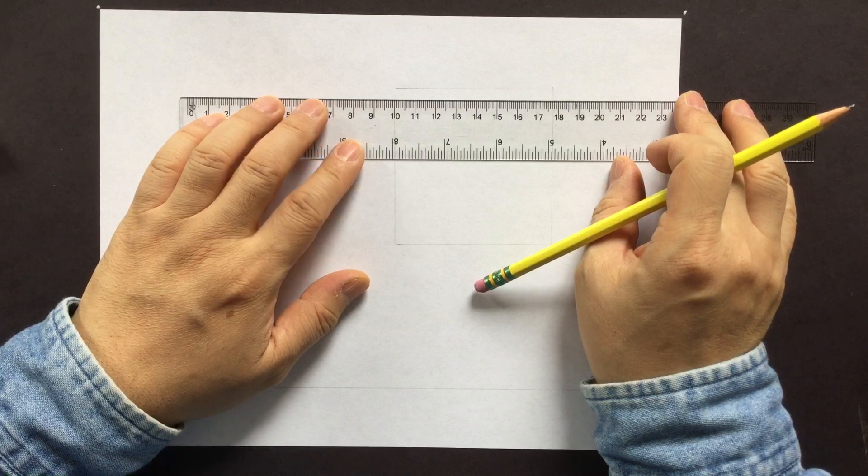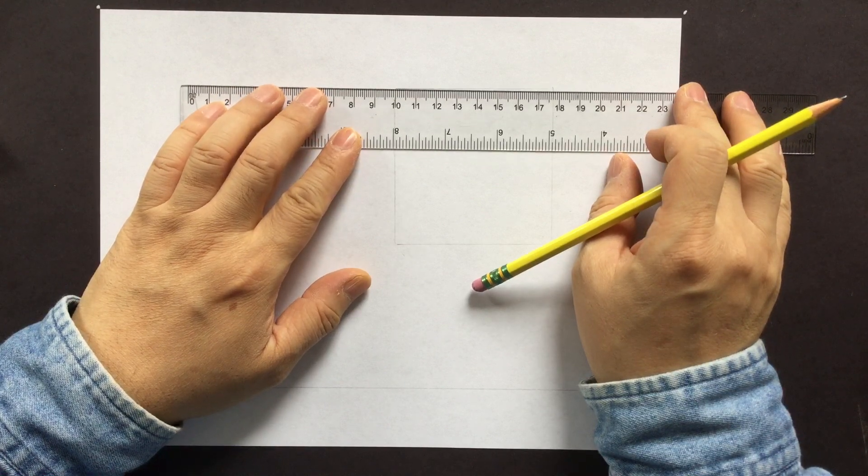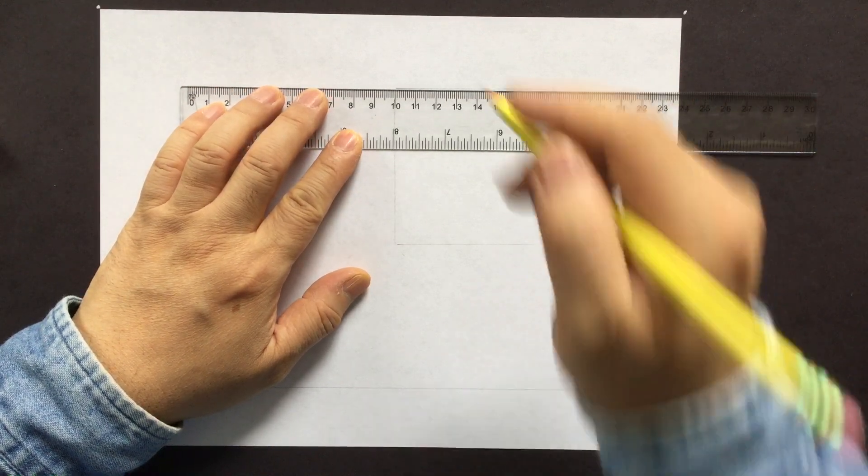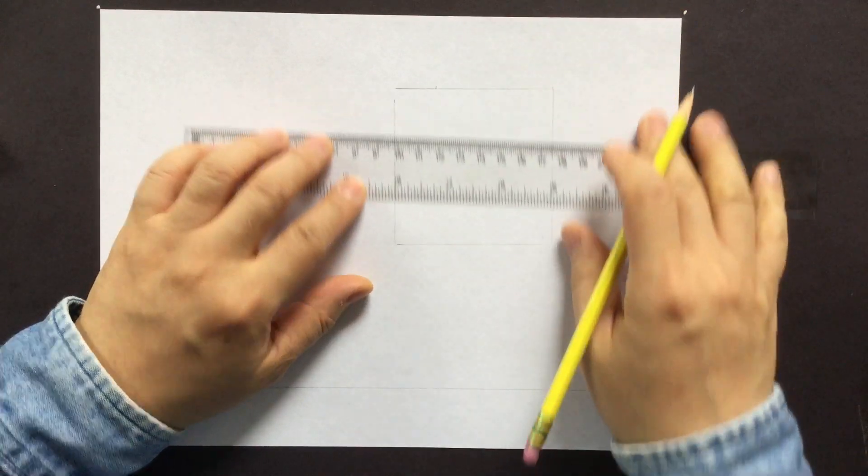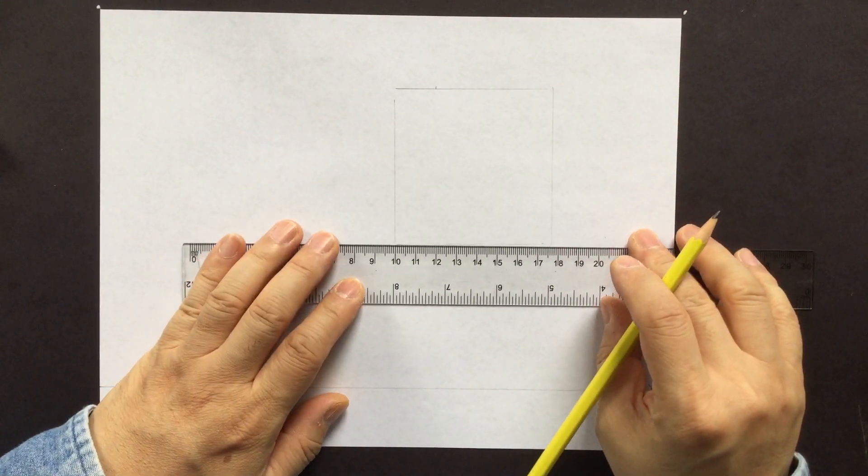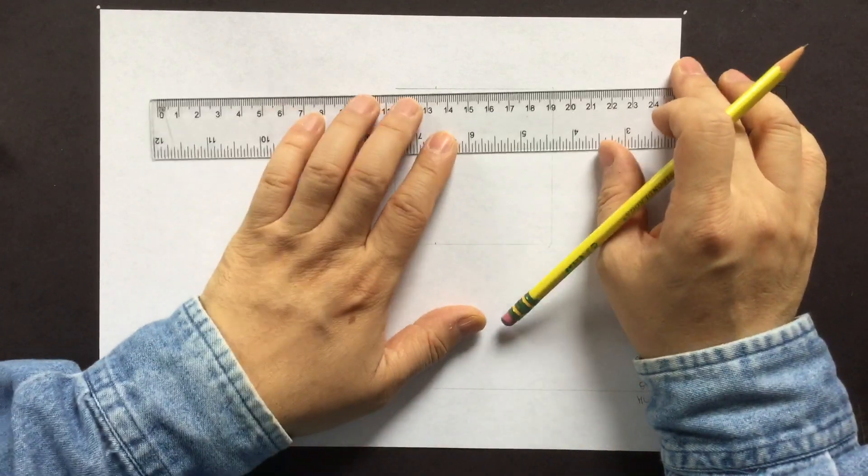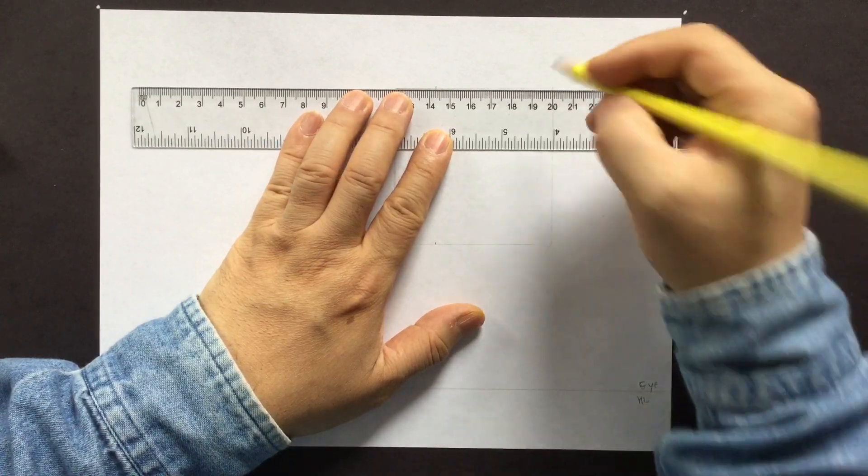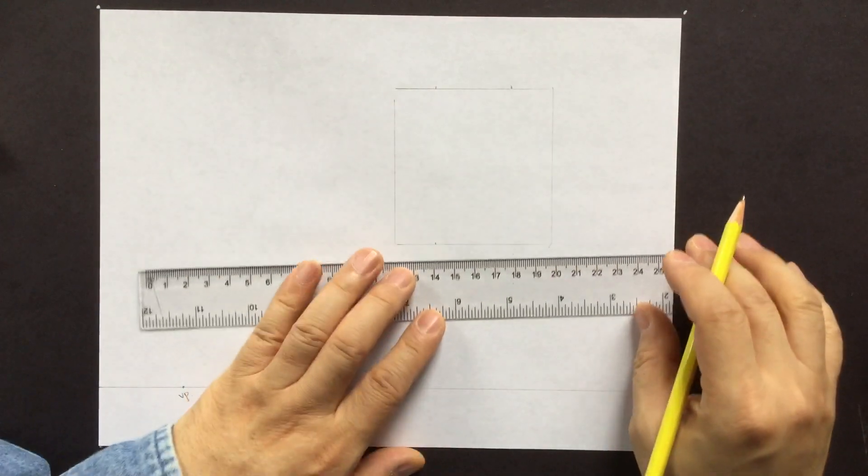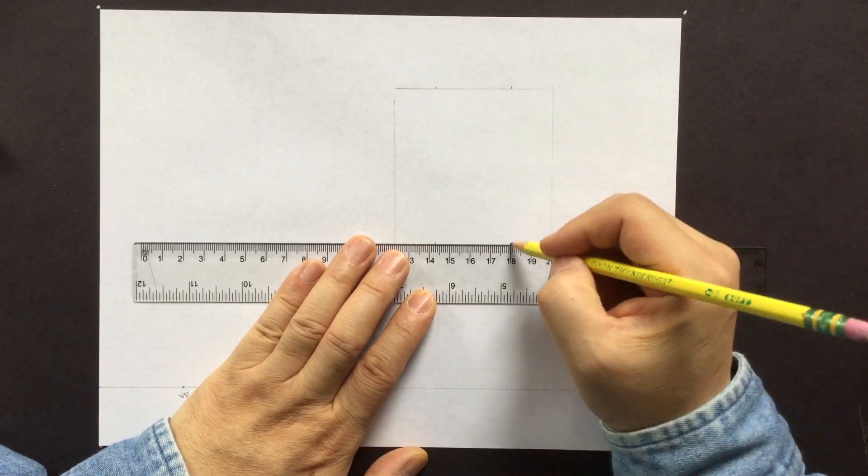So how about I go two centimeters, two centimeters at the bottom. You want to create two columns first, so two centimeters and two centimeters at the bottom.